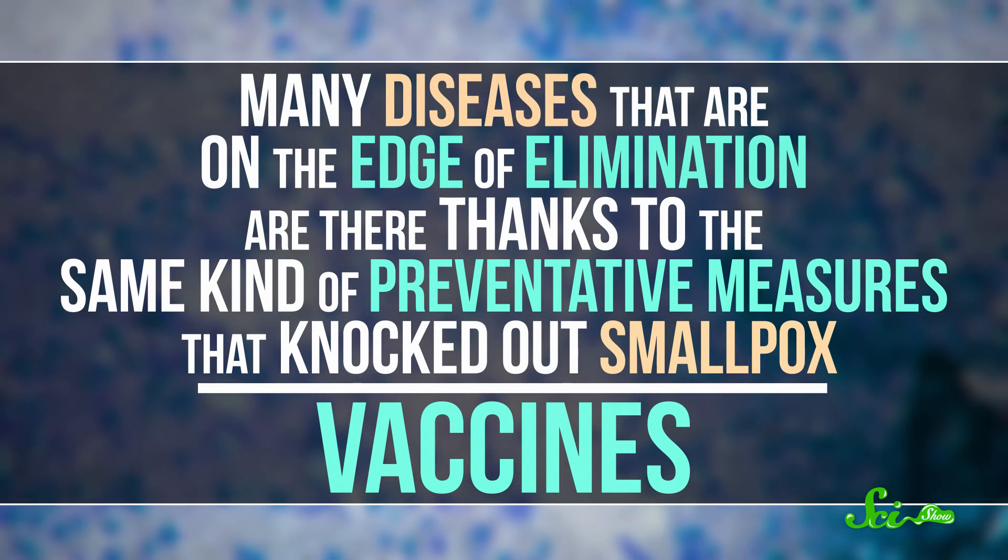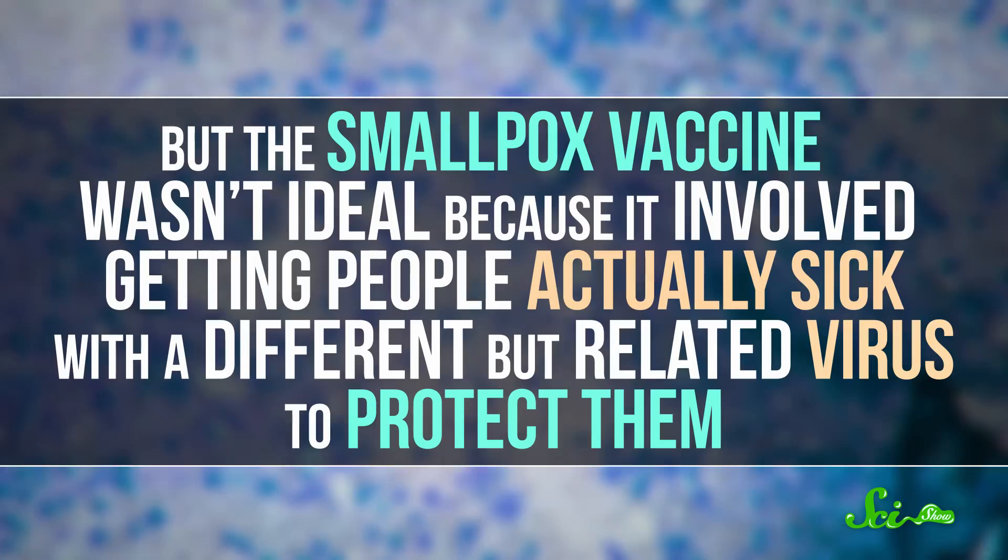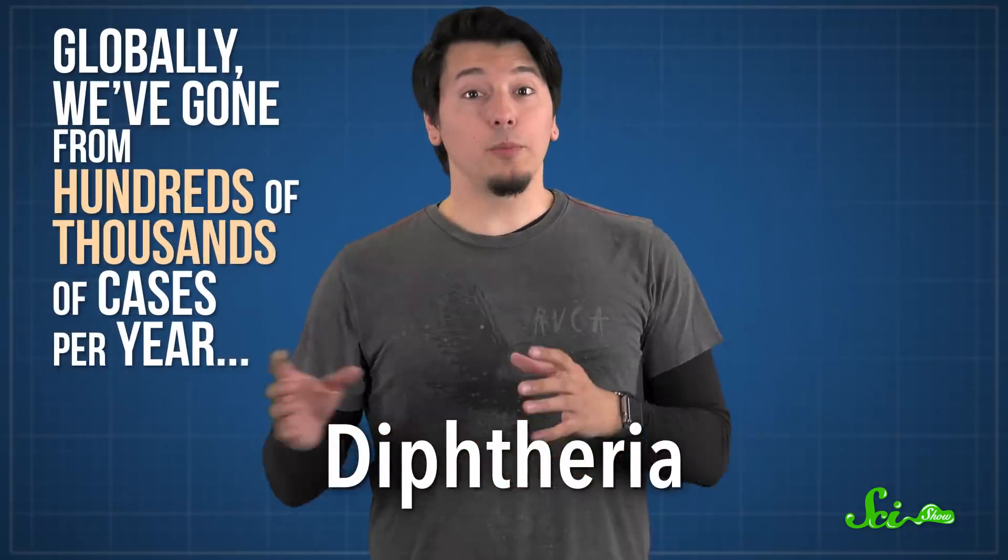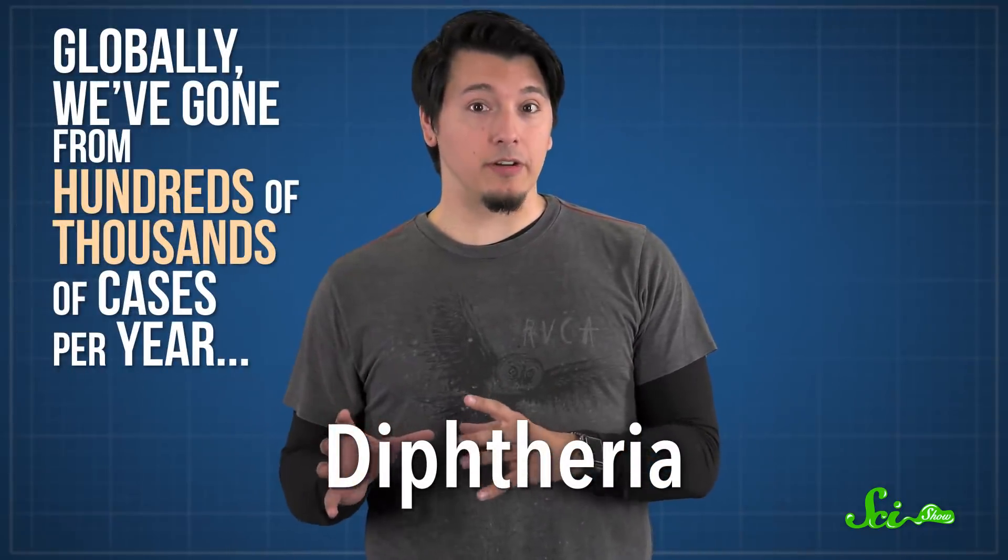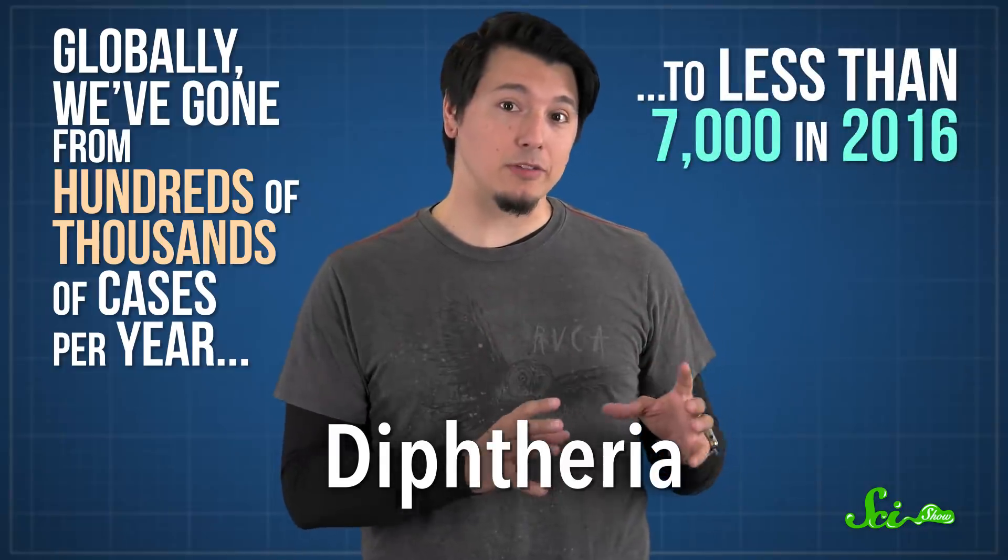Many diseases that are on the edge of elimination are there thanks to the same kind of preventative measures that knocked out smallpox — vaccines. But the smallpox vaccine wasn't ideal because it involved getting people actually sick with a different, but related virus to protect them. Most modern vaccines are different, and that's in part thanks to the creativity that led to the vaccine for the bacterial infection diphtheria. Globally, we've gone from hundreds of thousands of cases of diphtheria per year to less than 7,000 in 2016.